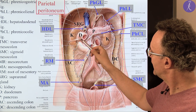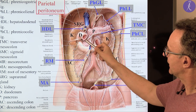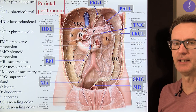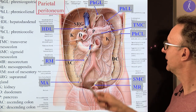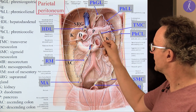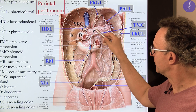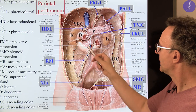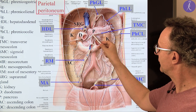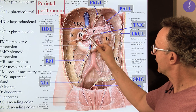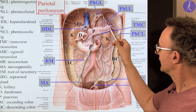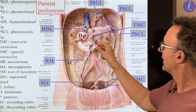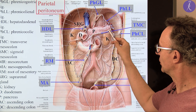In front of the pancreas — because the pancreas is a retroperitoneal organ — this is covered by the posterior parietal layer of the peritoneum. So in front of it we have a really elevating duplicate of the peritoneum called the transverse mesocolon.